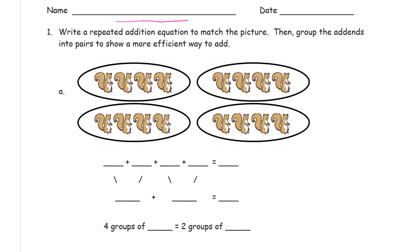So here we have squirrels, groups of squirrels, and there's four in each group. One, two, three, four, so these are fours. And there's four groups of them, so we have four fours.